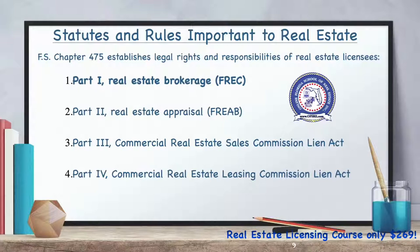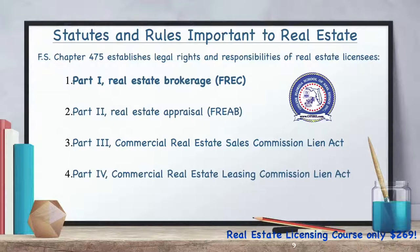Part Three of Chapter 475, known as the Commercial Real Estate Sales Commission Lien Act, gives the broker lien rights for earned commissions. This act applies only to commercial properties. The lien is against the owner's net proceeds and personal property from the sale, and does not attach to the commercial real property itself.